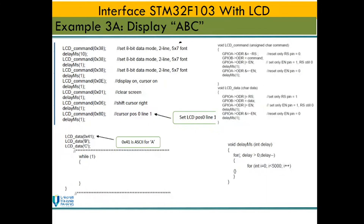Now we want to send characters A, B, and C one at a time. To send a character, we can use two ways: for example, using the ASCII code for A — LCD data 0x41 — or we can use the character in single quotes, such as LCD data 'B'. We type LCD data followed by the character we want to display. If you want a delay between characters, just put a delay between LCD data A and B, and between B and C. We will cover how to send a string like 'hello' in the next example.